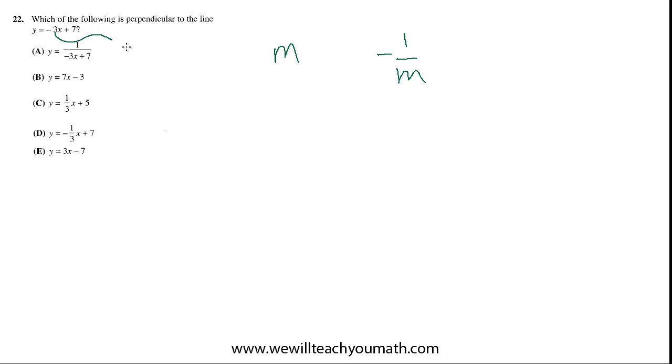This line has a slope of negative 3. So the opposite reciprocal of that is 1 third. So whichever one of these answer choices has a slope of 1 third, that's the one we want. That's the one that's going to be perpendicular. C is the only one that has it. That's the best choice.